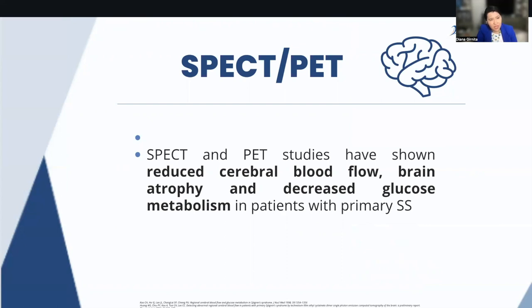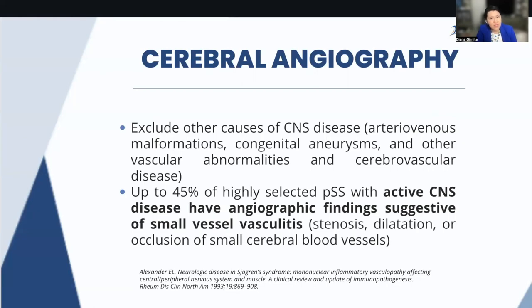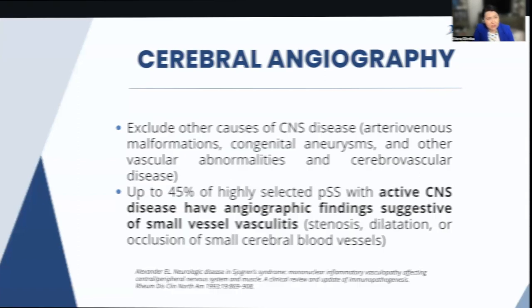Patients with Sjögren also show decreased glucose metabolism in the brain. In certain patients, neuropsychological testing is very important to evaluate subtle symptoms affecting the brain. Cerebral angiography is used more rarely, but when used in 45% of highly selective patients with Sjögren and active CNS involvement, it showed small vessel vasculitis in the brain.